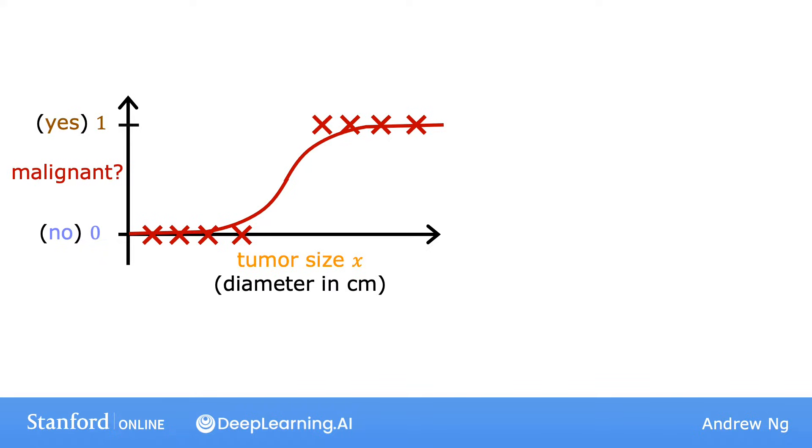And so for this example, if a patient comes in with a tumor of this size, which I'm showing on the x-axis, then the algorithm will output 0.7, suggesting that it's closer or maybe more likely to be malignant than benign. We'll say more later what 0.7 actually means in this context, but the output label y is never 0.7, is only ever 0 or 1.